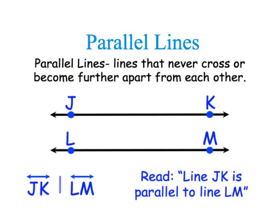We would read this as line JK is parallel to line LM. And I would show that here with JK. Whoops, it looks like we're missing a line. This line is parallel to line LM.